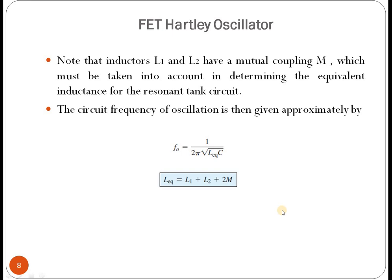For the FET Hartley oscillator, if the inductors have a mutual coupling value M, we need to take it into account when finding the oscillation frequency. The frequency is F₀ = 1 / (2π√(L_eq·C)), where L_eq = L1 + L2 + 2M. Here M is the mutual coupling value between inductors L1 and L2.